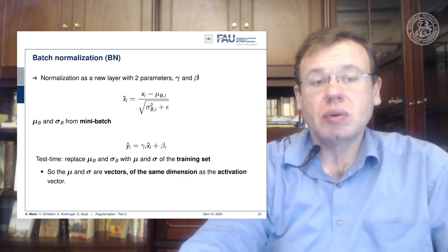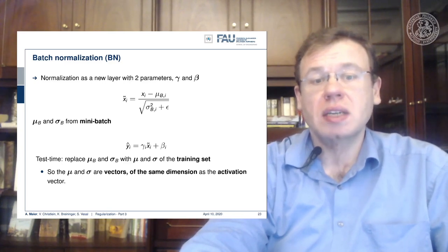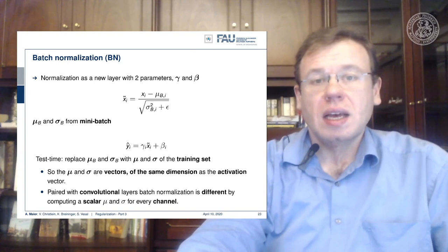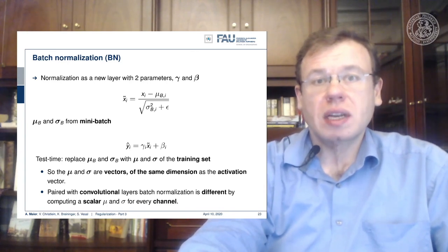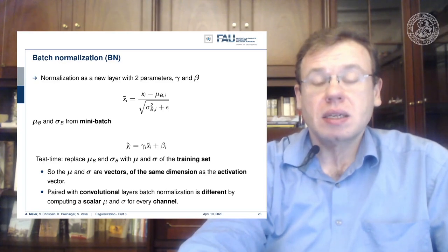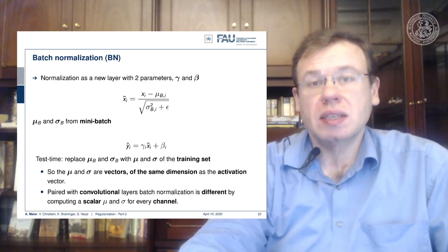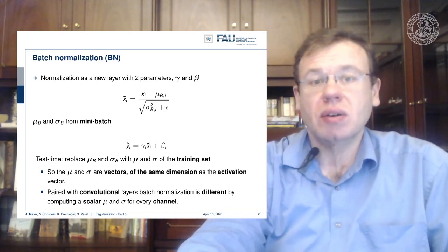Of course, mu and sigma are vectors and they have exactly the same dimension as the activation vector. If you pair this with convolutional layers, the batch normalization is slightly different by using a scalar mu and a sigma for every channel. So there's a slight difference if you use it in convolutional layers.